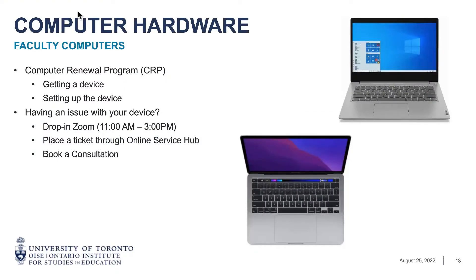Services and support — computer hardware. As part of our CRP program, you receive a device for a four-year period and then it gets renewed. This is covered by an $1,800 budget, depending on your use case. We would reach out to you with a list of devices, you can have consultations with myself or the service delivery team, we find the best spec device for you, it gets ordered, and then set up with white glove service. If you have any issues or questions about your computer, you can join the Zoom drop-in from 11 to 3 Monday to Friday, place a ticket through our online service hub, or book a consultation.